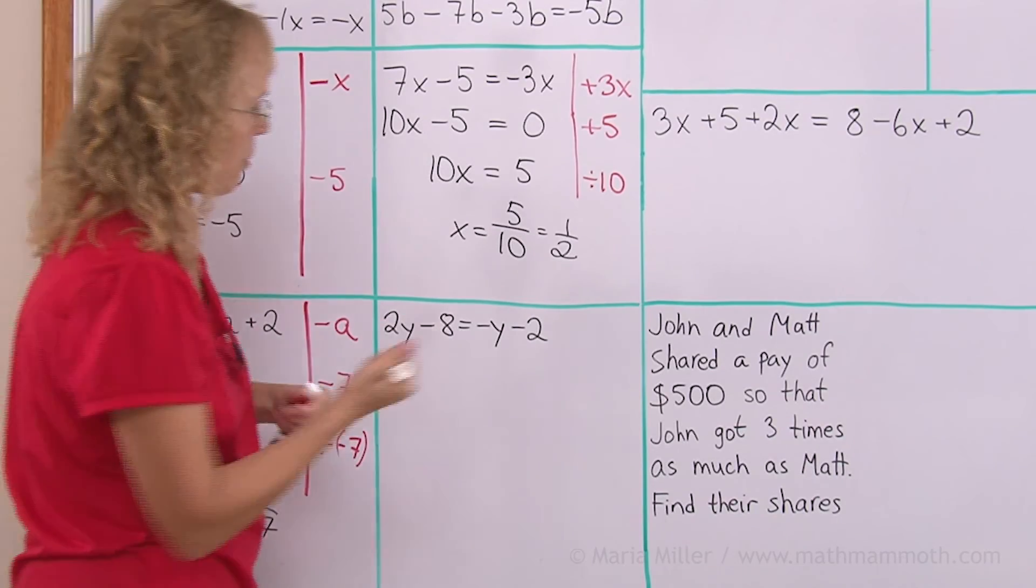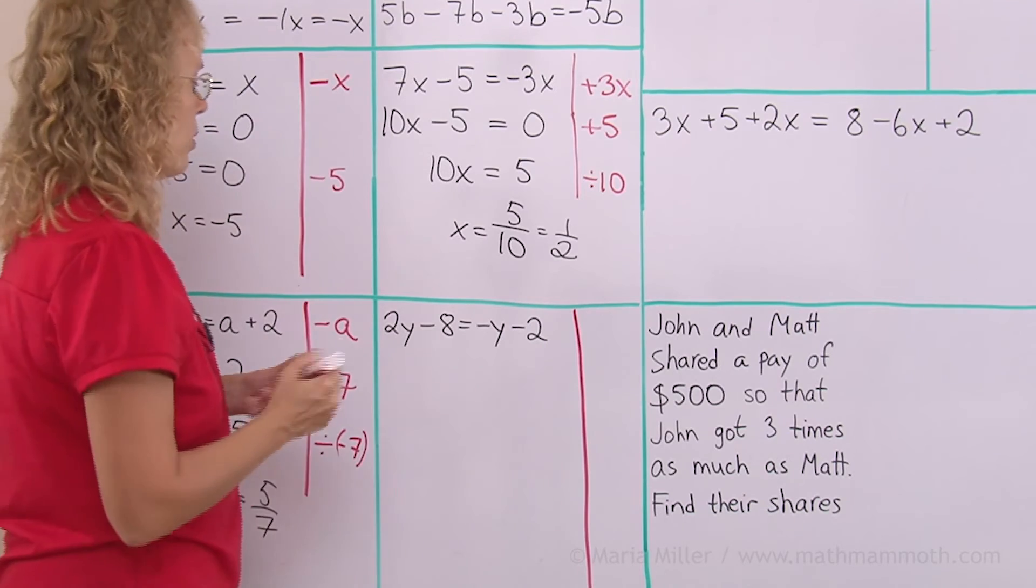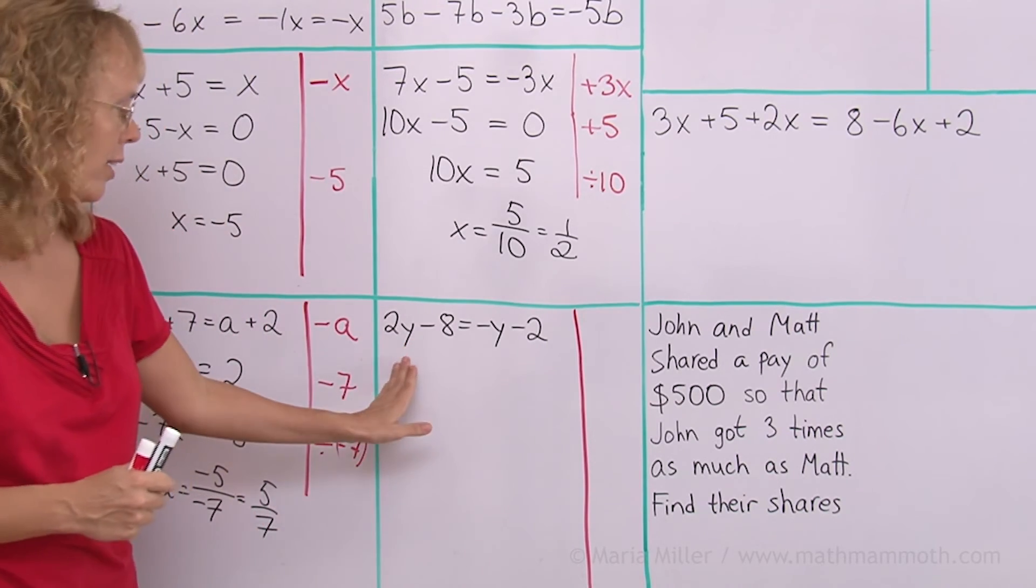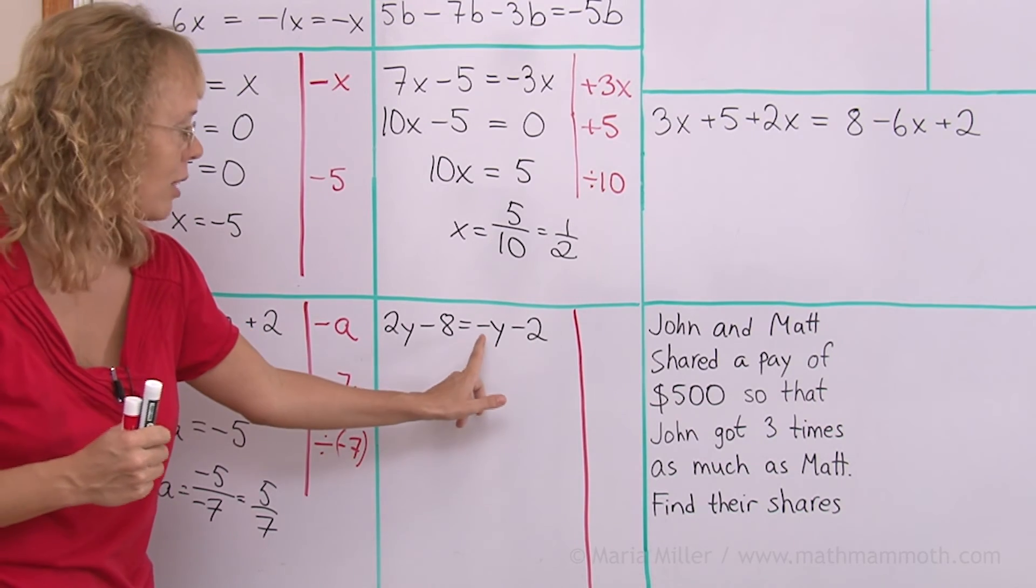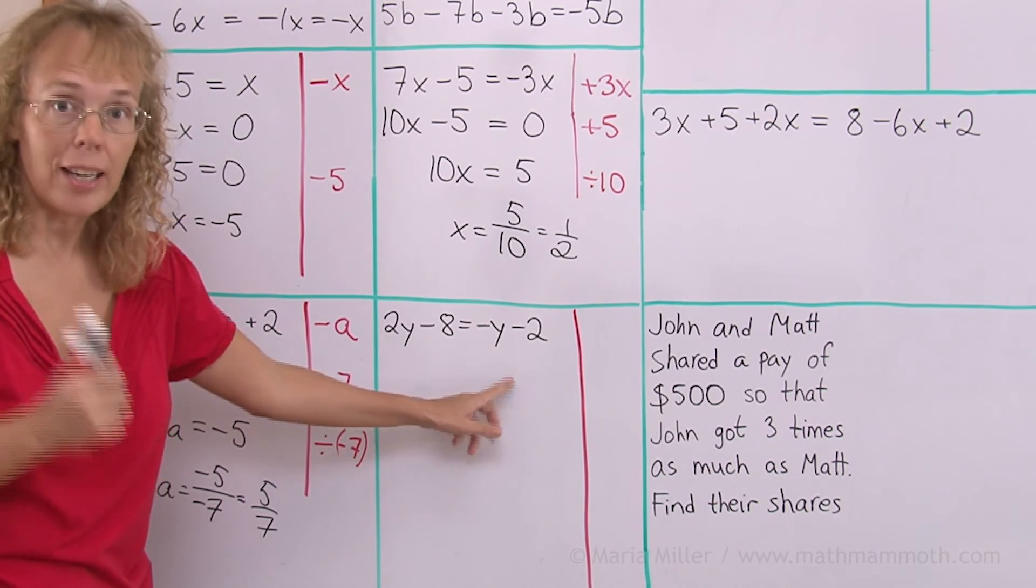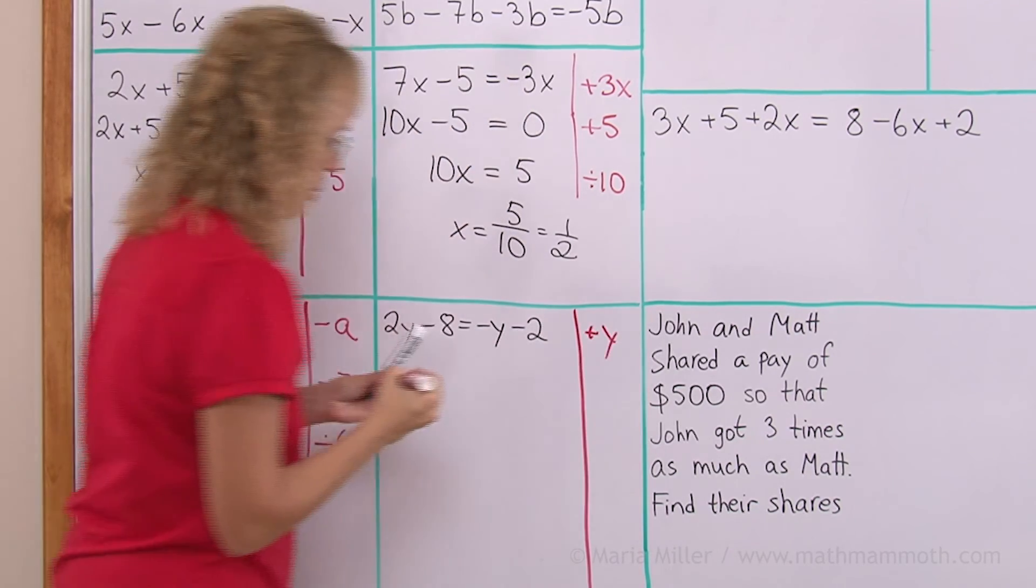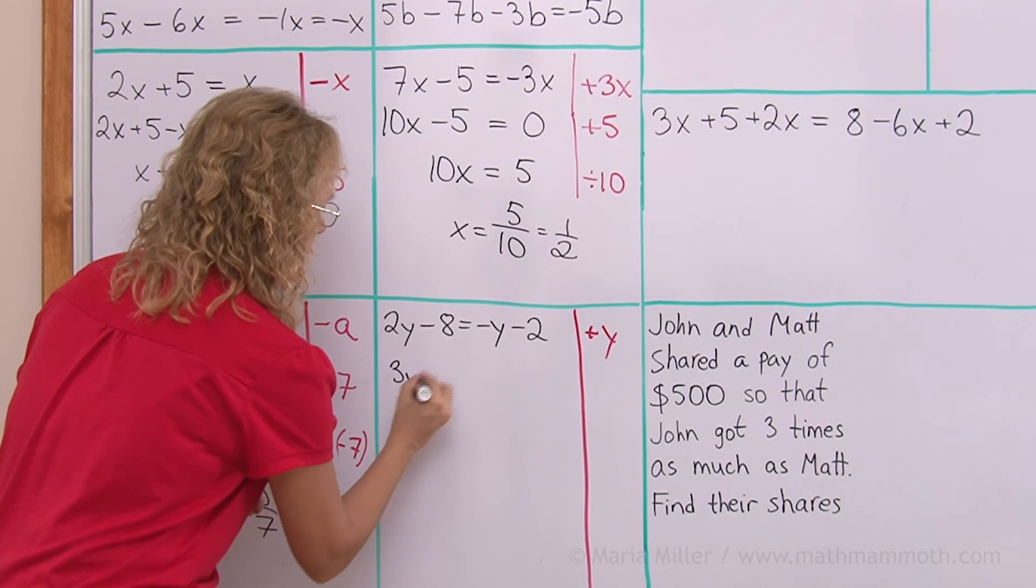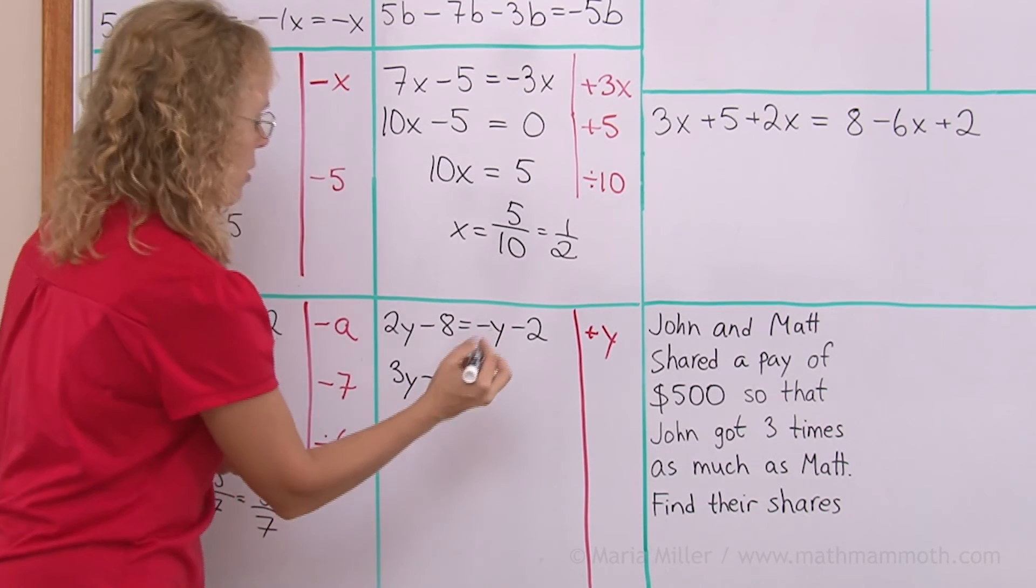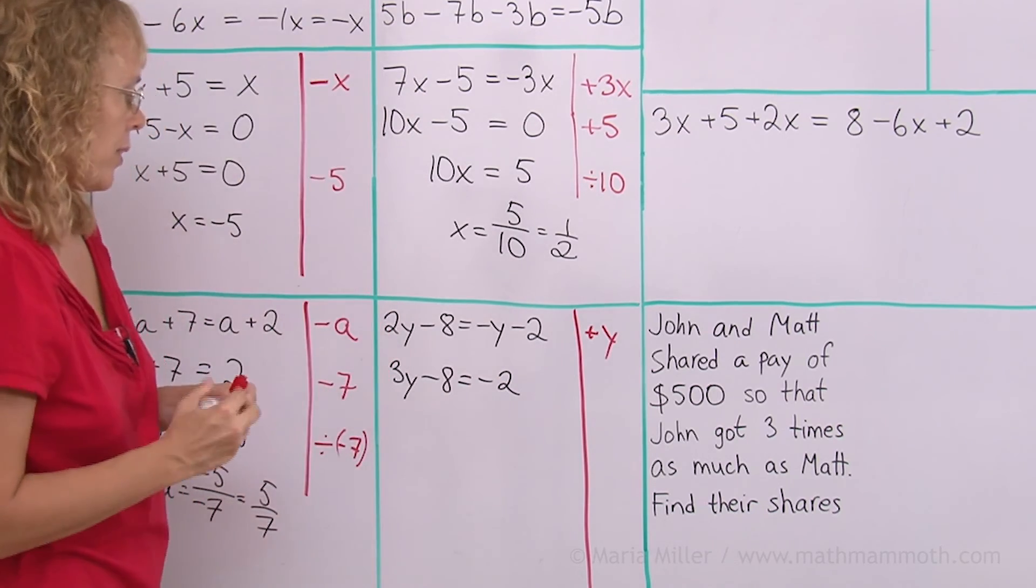Next one. Let me make my margin here. I want to have my y terms on this side, not on that side. So, to get rid of this negative y, I add y, right? Add y to both sides. And this leaves here. This becomes 3y now. This minus 8 doesn't change. Neither does the minus 2.